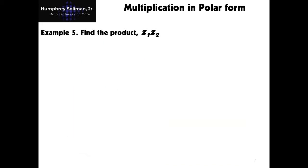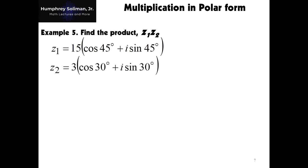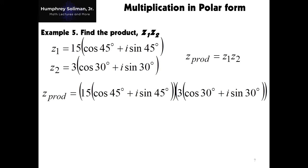Next in our presentation, we have multiplication in polar form. If you are asked to perform addition or subtraction in polar form, convert it first to rectangular form so that you can add or subtract. Example number 5, we will use polar forms. We have z1 equal to 15 times the quantity cosine 45 degrees plus i times sine 45 degrees, and z2 equal to 3 times the quantity cosine 30 degrees plus i times sine 30 degrees. We will call the product of these complex numbers z prod again.